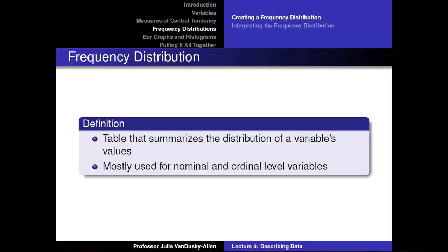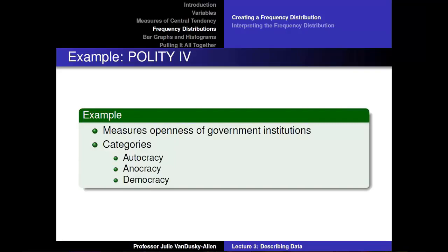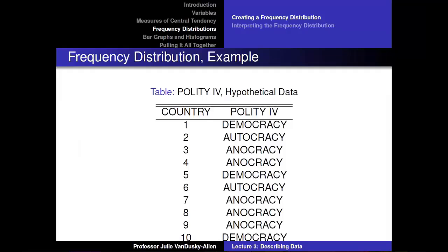Frequency distributions, bar graphs, and histograms tell us whether most observations have values close to or spread away from the mean, median, or mode. A frequency distribution is a table that summarizes the distribution of a variable's values, telling us how many observations each value takes. It is mostly used for nominal and ordinal-level variables. As an example, I will use hypothetical POLITIVOR data, which measures the openness of democratic institutions, classifying countries as autocratic, onocratic, or democratic. This is a hypothetical dataset of 10 countries.